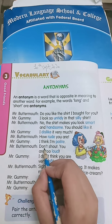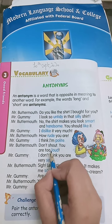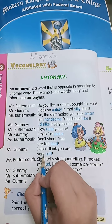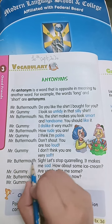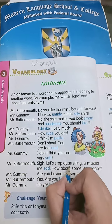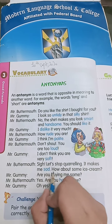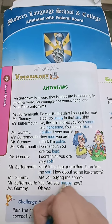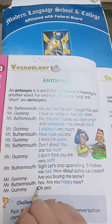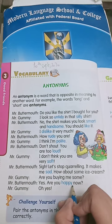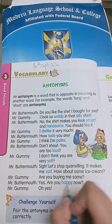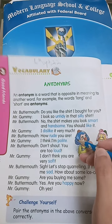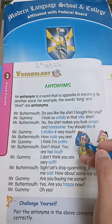Mr. Buttermouth, don't shout, you are too loud. Mr. Jummy, I don't think you are very soft. Mr. Buttermouth, let's stop quarreling, it makes me sad. How about some ice cream? Mr. Jummy, are you buying me some? Mr. Buttermouth, yes. Are you happy now? Mr. Jummy, oh yes! These blue words are antonyms. Now kindly pick out your activity books and we will do the exercise.